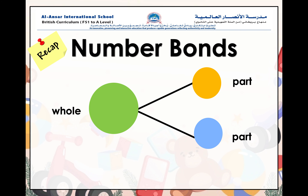Let's recap. When we learned about number bonds, we learned that a number bond has a whole and two parts. So two parts make a whole.